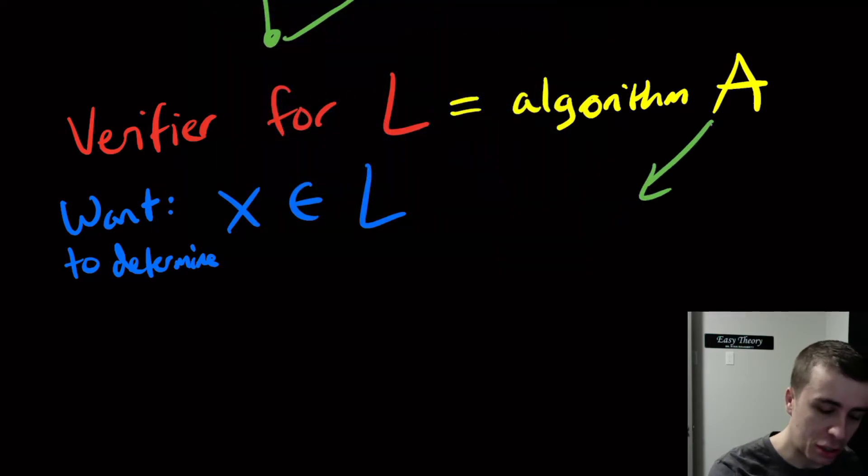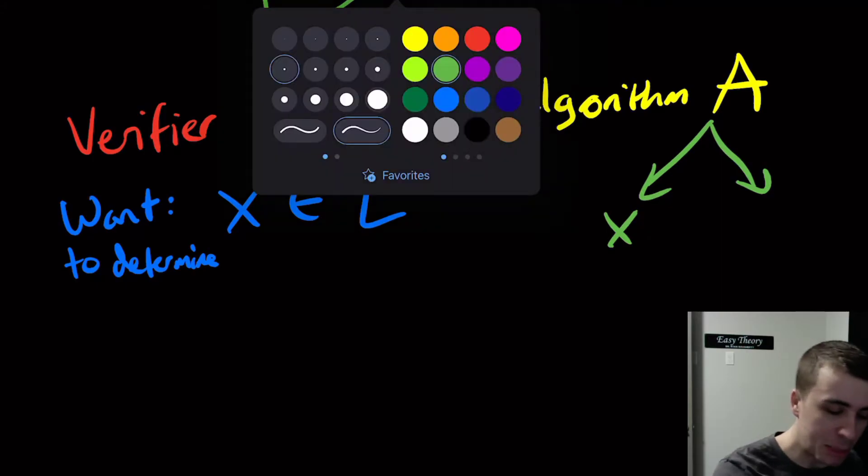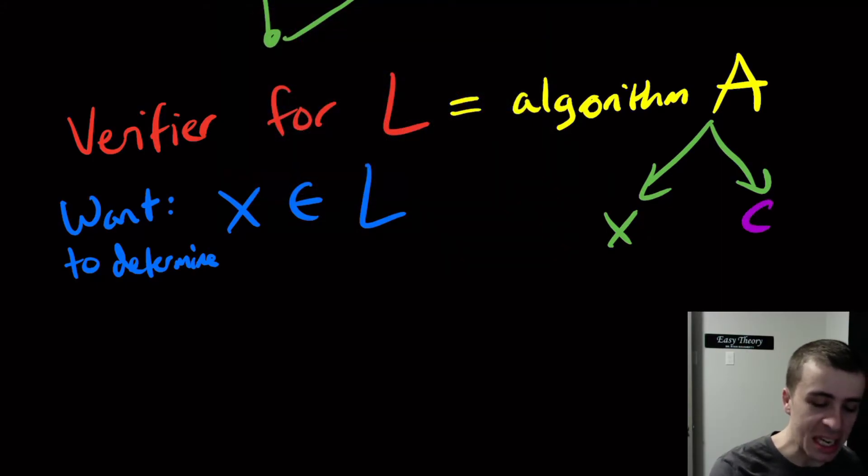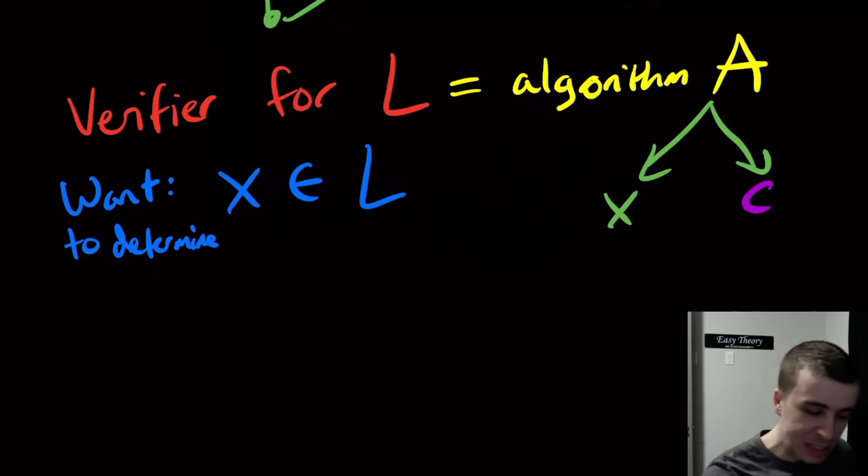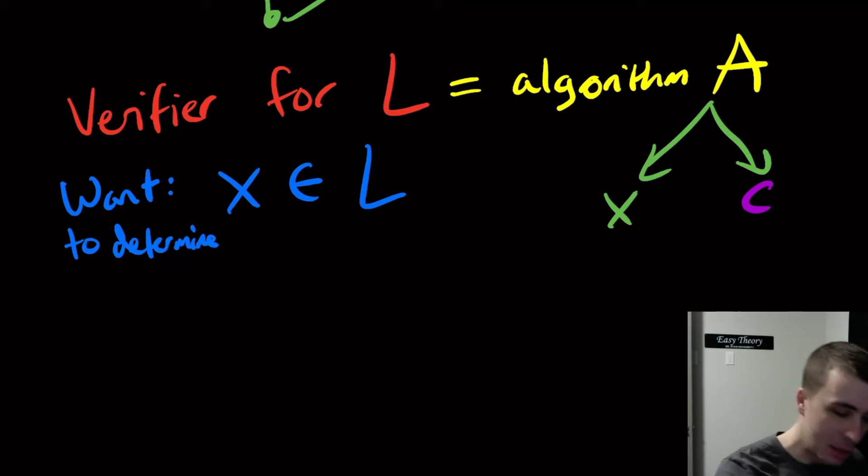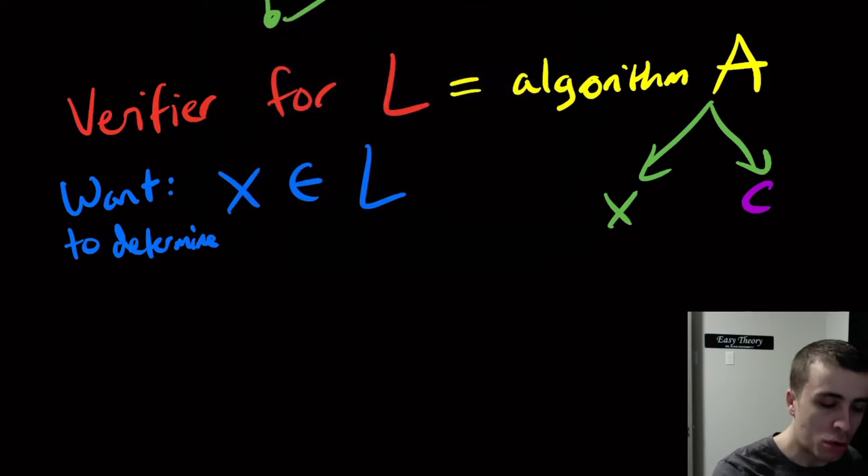The two inputs are going to be X and a special type of input called C. The X is the same thing as over here, whatever the input would have been for an algorithm for L, but this C is an additional thing.